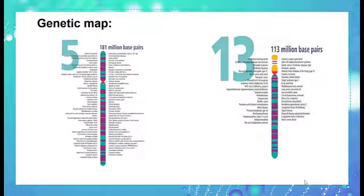FISH and other techniques allowed scientists to construct human genetic maps by determining the loci of genes and the distances between them on all the human chromosomes.